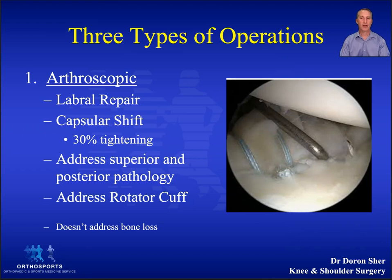There are essentially three types of operation that can be done for shoulder instability. An arthroscopic Bankart repair is the most common. Even with minor bone loss, this is an extremely effective operation.